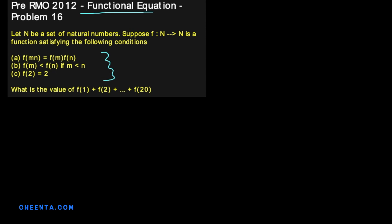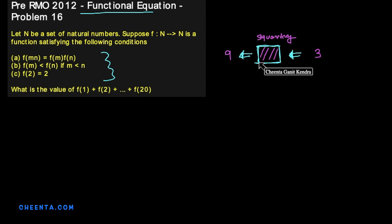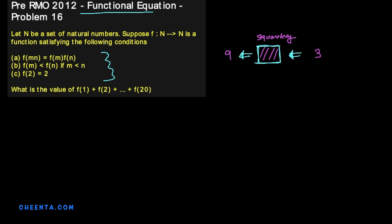Before we go further, let's talk about what a function is. You can think of a function as an input-output machine. One favorite example is squaring — this machine takes in a number, say 3, and gives out another number, in this case 9. It's a processing unit that takes in a number and gives out another number.